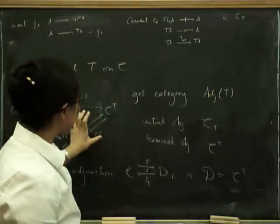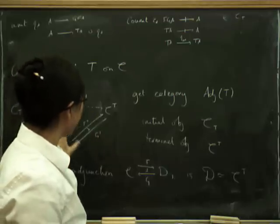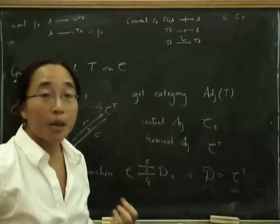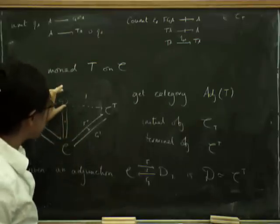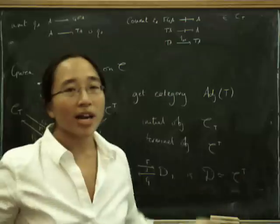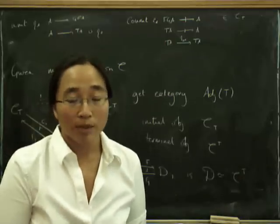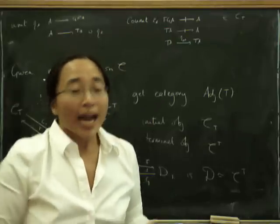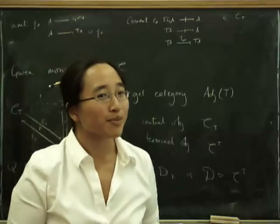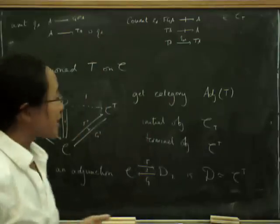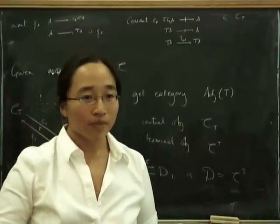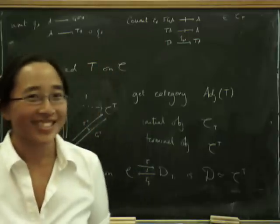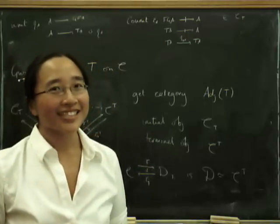Monadic adjunctions are particularly canonical forms of adjunction. Asking for an adjunction to be monadic is abstractly asking for it to be in a particularly canonical form, and in practice it means D is really like a category of algebras. Categories of algebras are particularly well-behaved — they have very good features, and it's easy to construct limits in them.